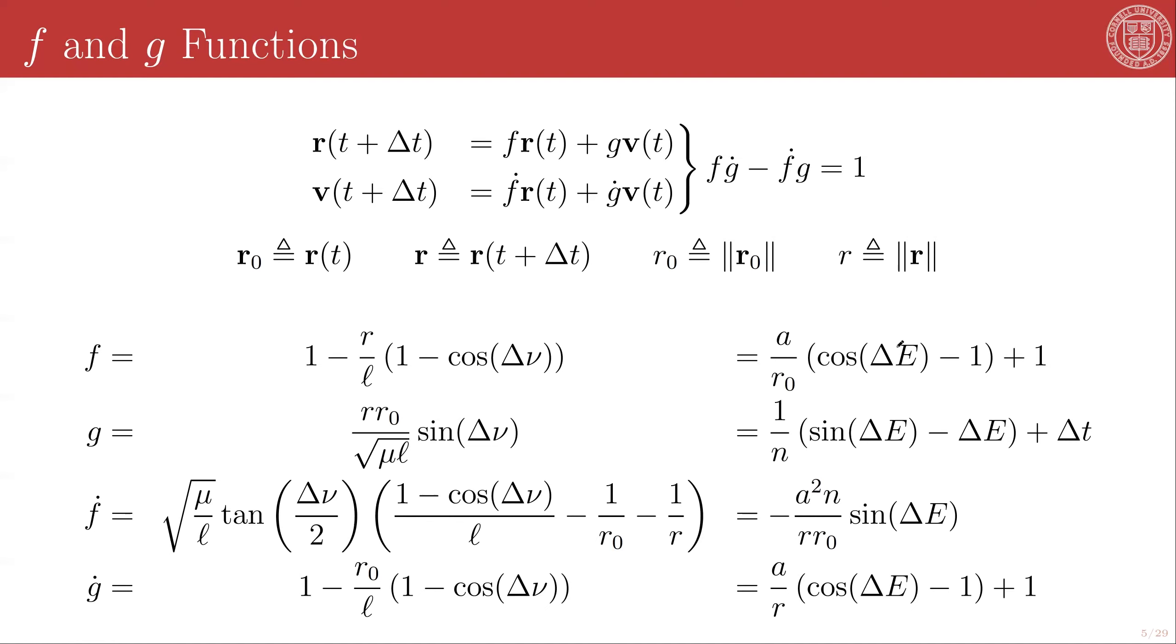And when you crunch throughout the algebra, you find these relatively simple expressions as functions of the initial orbital radius, the final orbital radius, and the change in true anomaly, or equivalently, the change in eccentric anomaly. And this is great, because now we have a fully linear system that directly propagates the orbital radius and orbital velocity vectors.